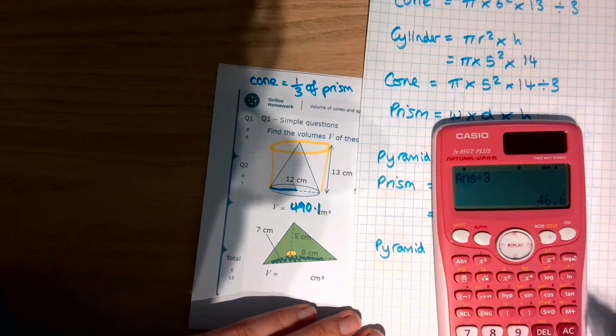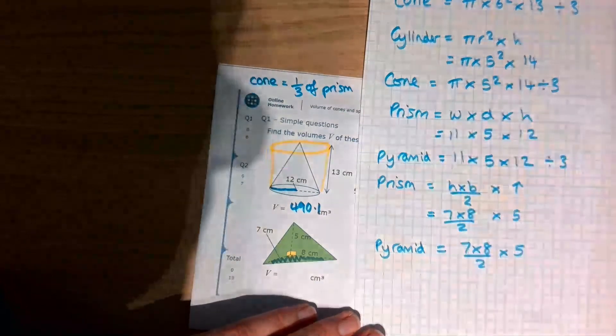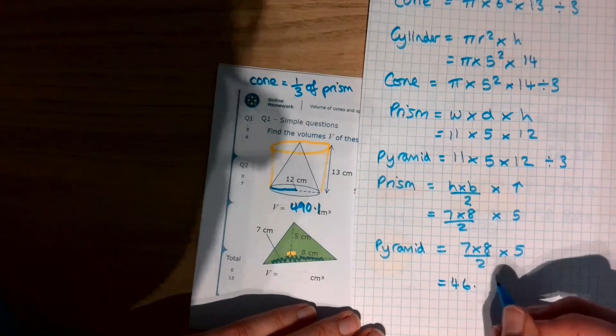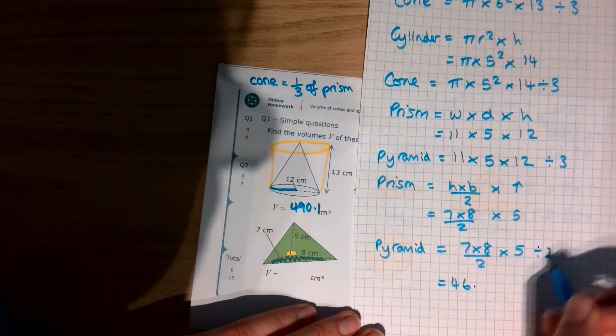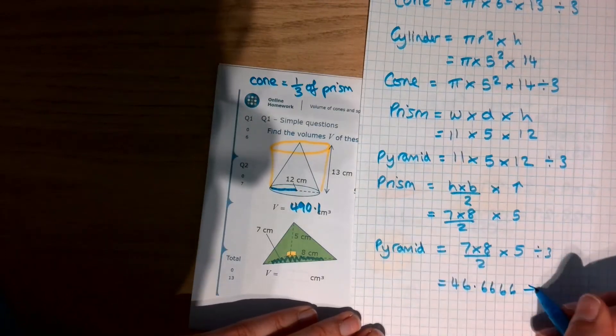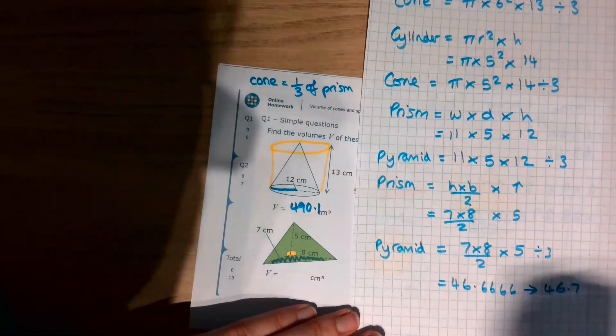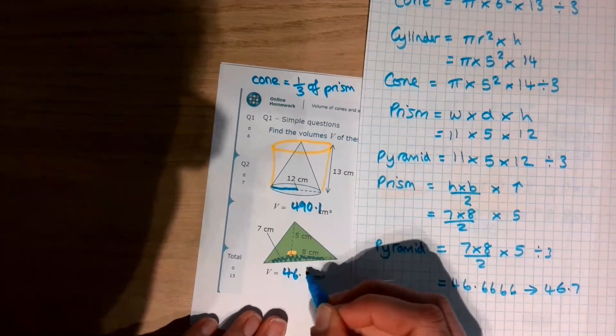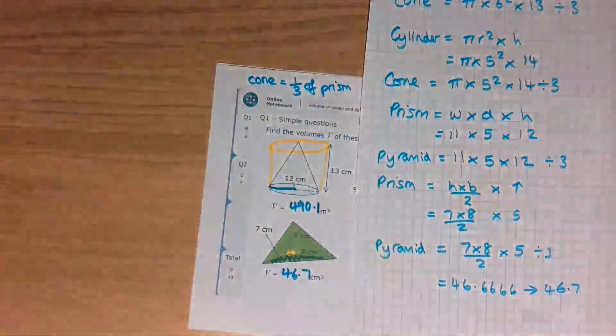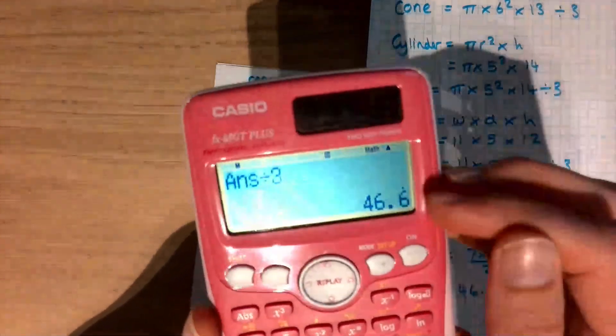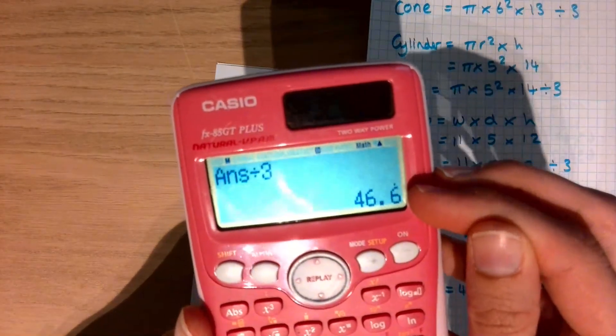46.6 recurring. Now remember, if it's 0.6 recurring, then it's 66666, which means that actually this is going to round to 46.7. Really sneaky, that one. I bet some of you would have put 46.6. Have a look at the calculator. Can you see the dot above the 6? Really important, you pay attention to that.